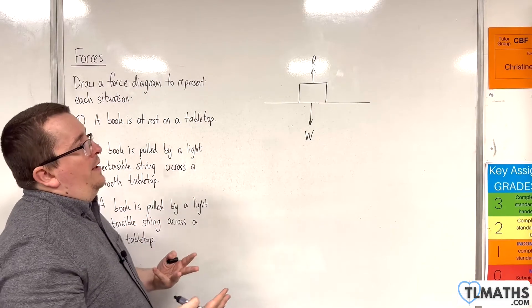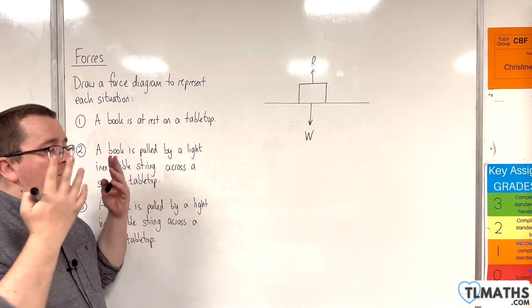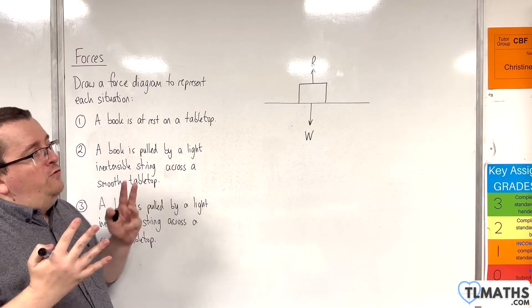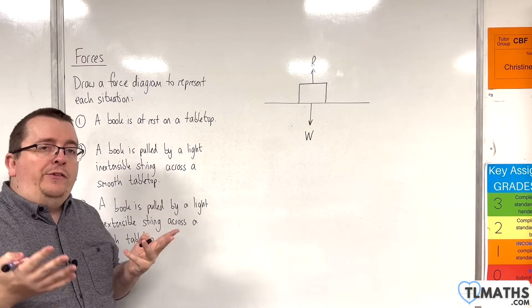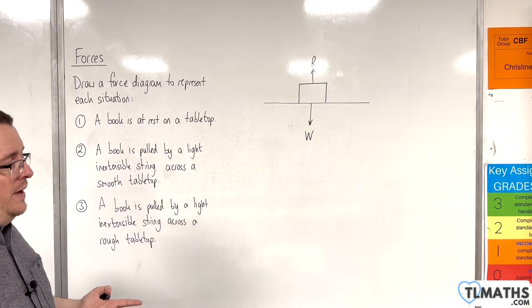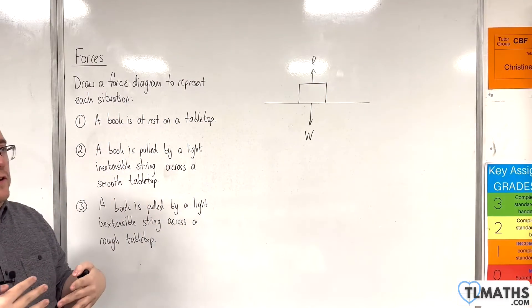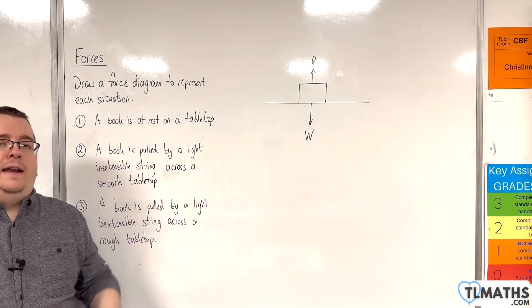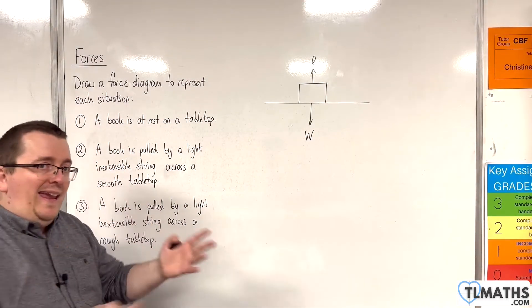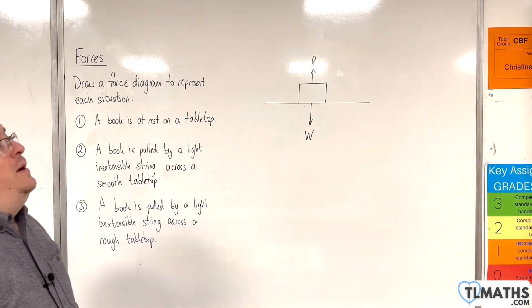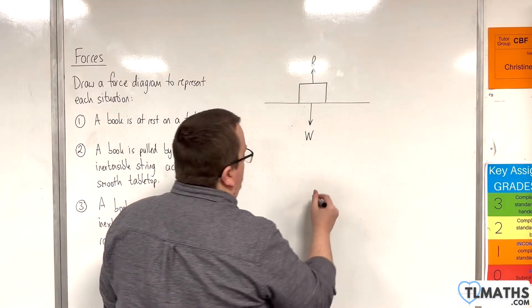Now, when I draw this, you can see that I've kind of embellished it. I don't need to draw the table and I don't need to draw the book as a rectangle. So this diagram is embellished to help me visualize what's going on. And if I was drawing this just to aid me, I would draw it like that.